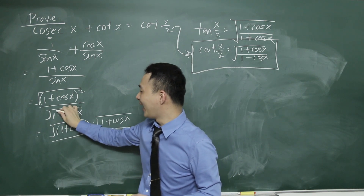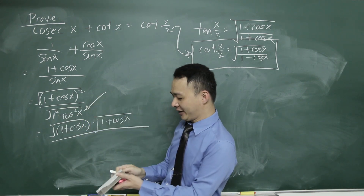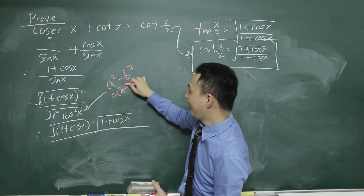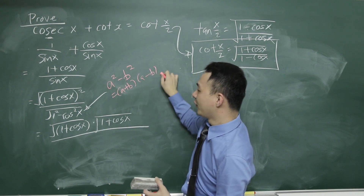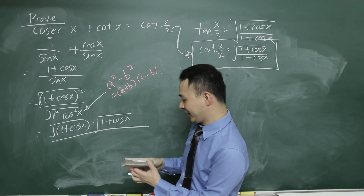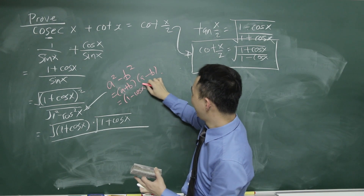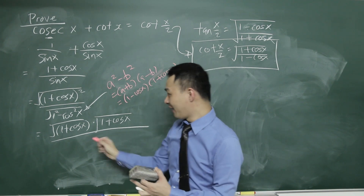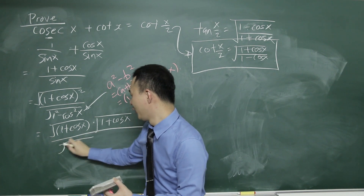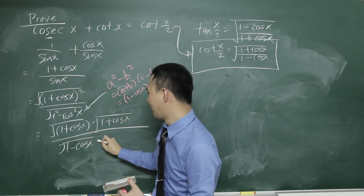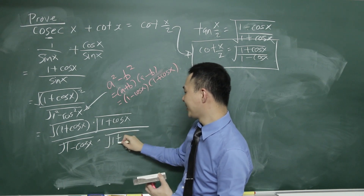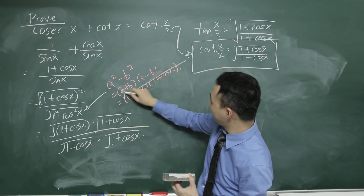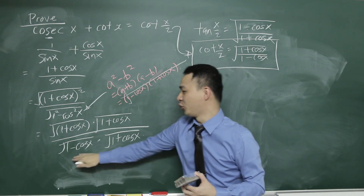For the denominator, I give it a square as well. You will see the pattern: this is a squared minus b squared form. And a squared minus b squared factors as (a plus b)(a minus b). So therefore I will have 1 minus cos x times 1 plus cos x. Applying the same square root separation, this becomes square root of 1 minus cos x multiplied by square root of 1 plus cos x.